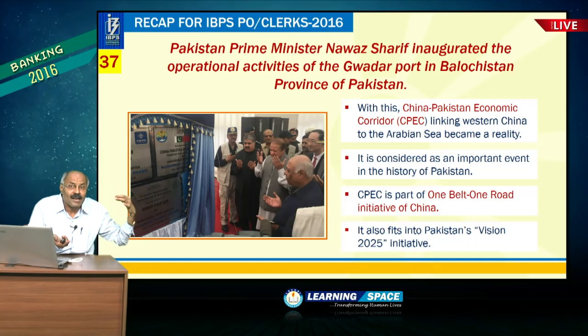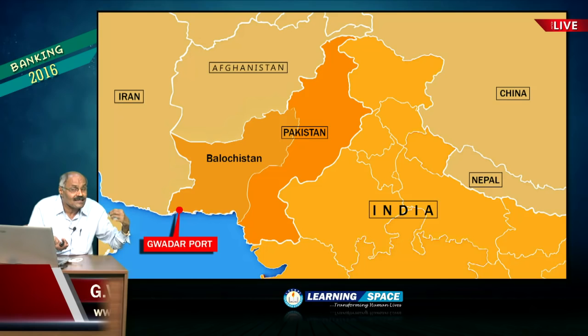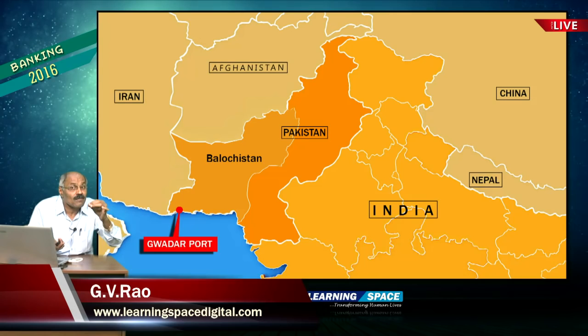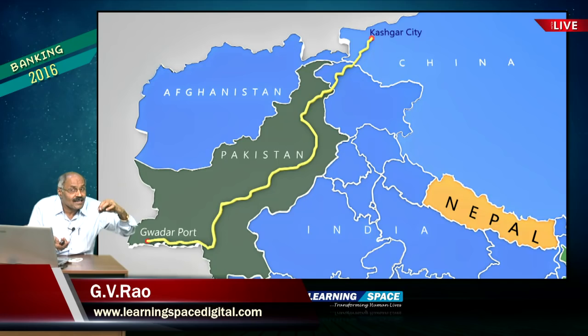Pakistan's Prime Minister inaugurated Gwadar Port. One Belt One Road initiative is of China. Gwadar Port is in Pakistan, specifically in Balochistan province. Chabahar Port is in Iran; the distance between Chabahar and Gwadar is not much. Don't forget China-Pakistan Economic Corridor — CPEC.